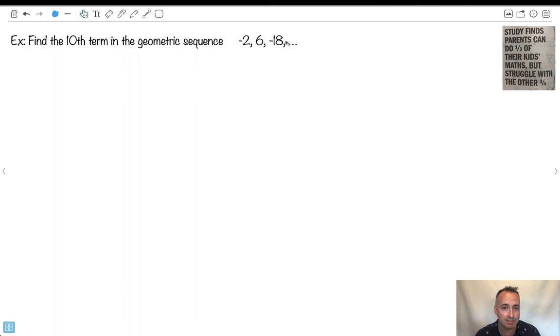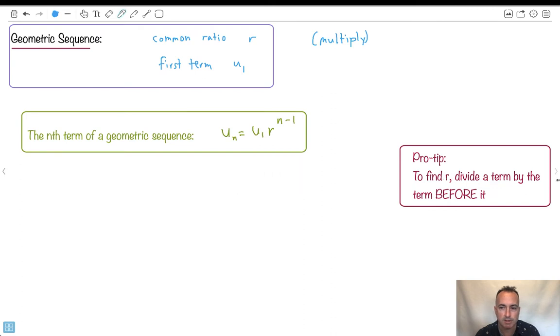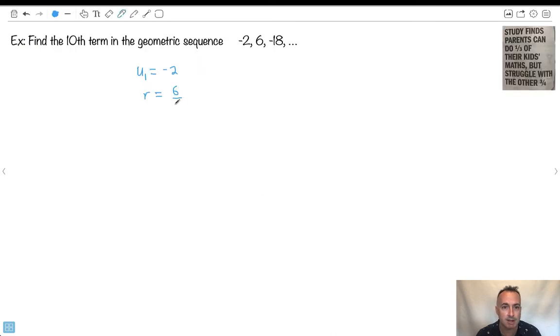So we want the 10th term in this one. Now do you notice what's happening here? It looks a little bit crazy but we're told it's geometric. And if we're told it's geometric, well we know the first term. The first term is just negative 2. Well we got to find R. How do we find R? Remember that pro tip. Take any term, divide it by the term before it. So I'll take my 6 and divide it by negative 2. 6 over 2 is 3 but this is a negative so it's negative 3. Let's see if it works for negative 18 over 6. And it still gives me 18 divided by 6 is 3 and it's a negative here. So yep, I know that R equals negative 3. That's one of my pieces I'm going to need as well as U1.